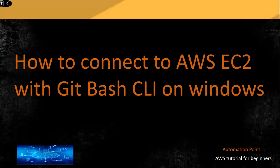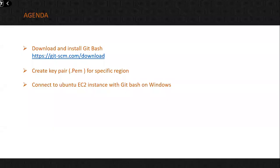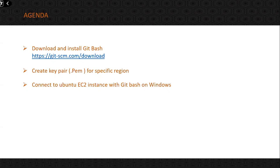Hi guys, welcome back to the Automation Point. In this tutorial we will see how to connect to an AWS EC2 instance with the Git Bash CLI on a Windows machine. The agenda: first we will download and install Git Bash, then we will see how to create the key pair — the PEM file — for a specific region, and then using that key pair we will connect to the EC2 instance with Git Bash CLI.